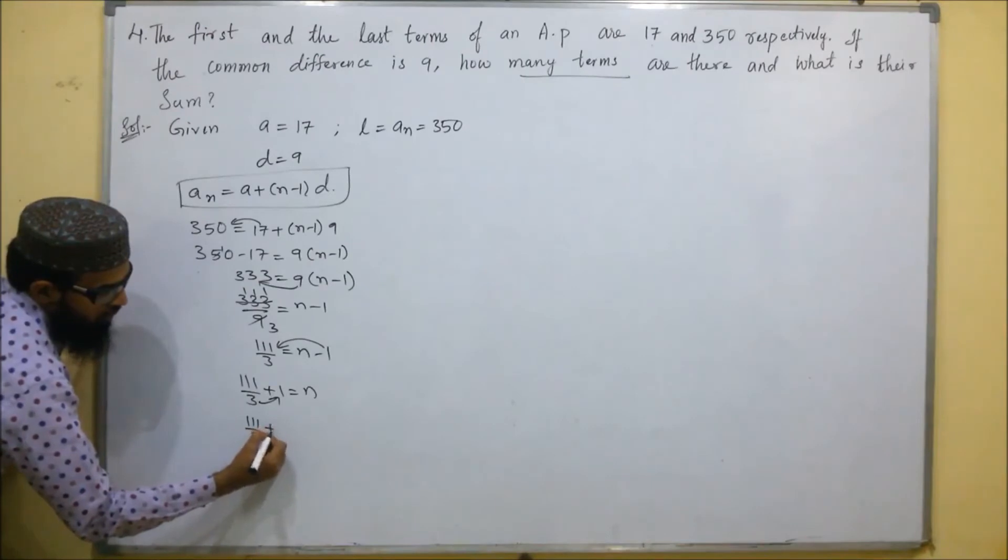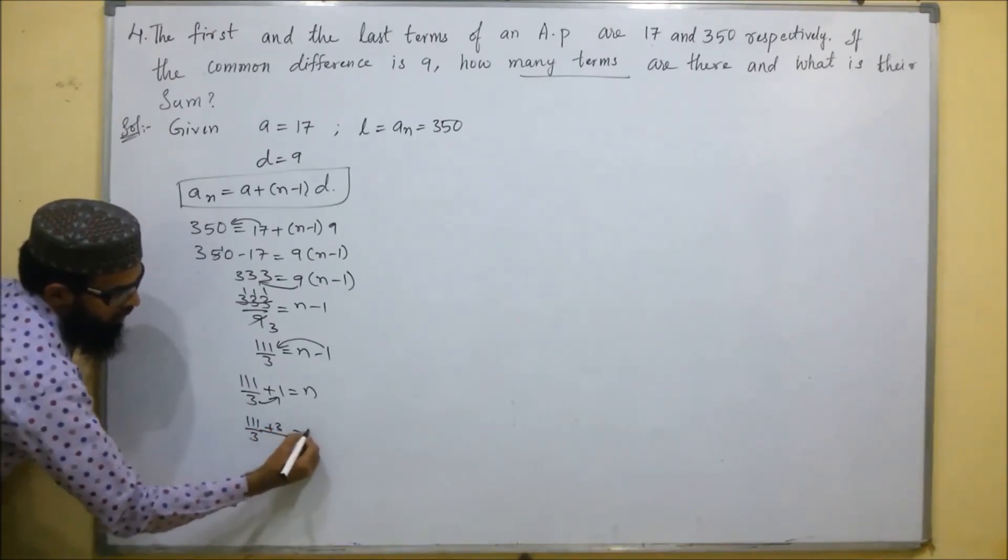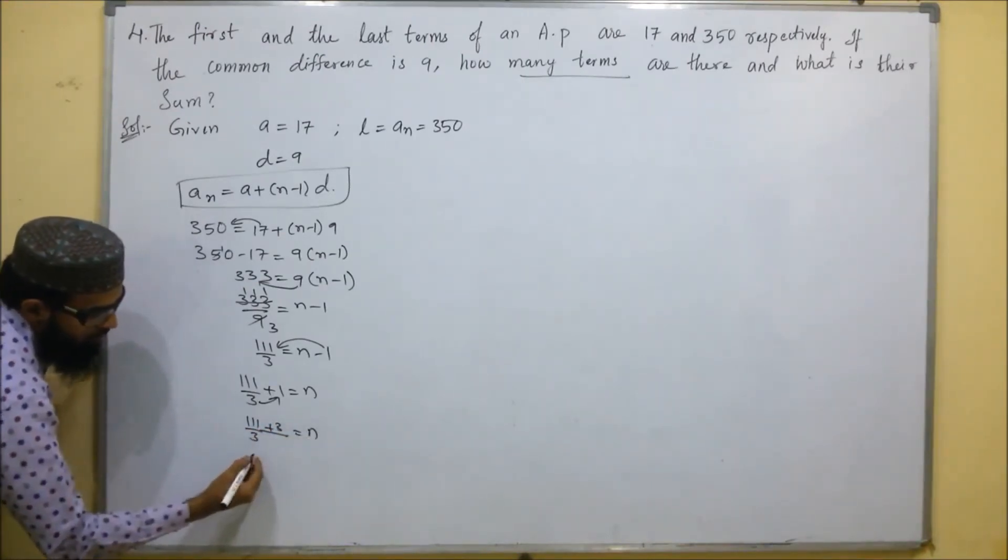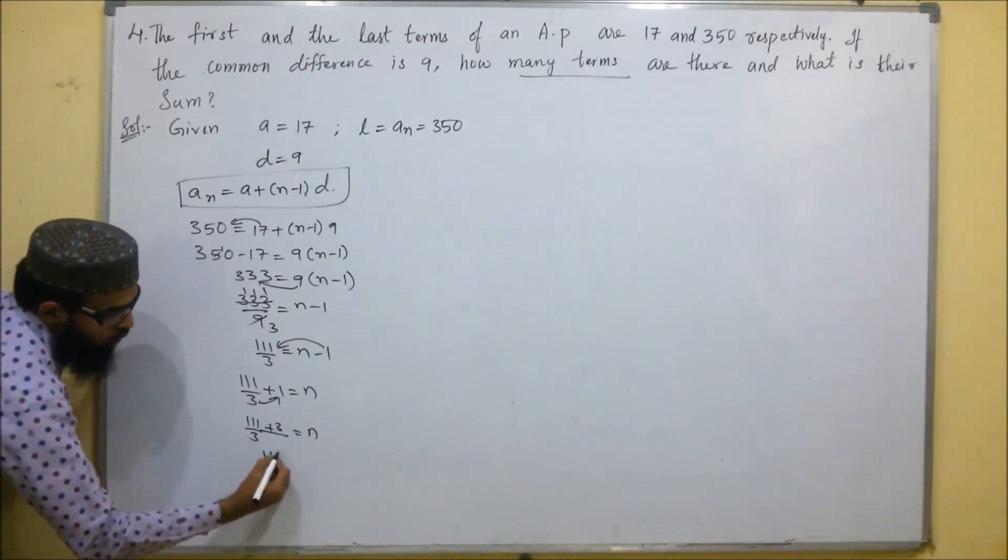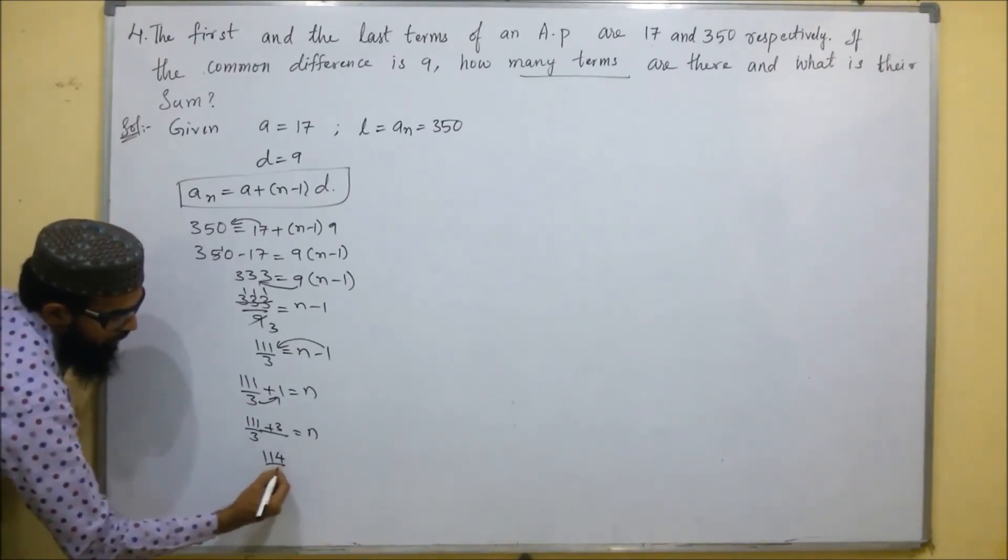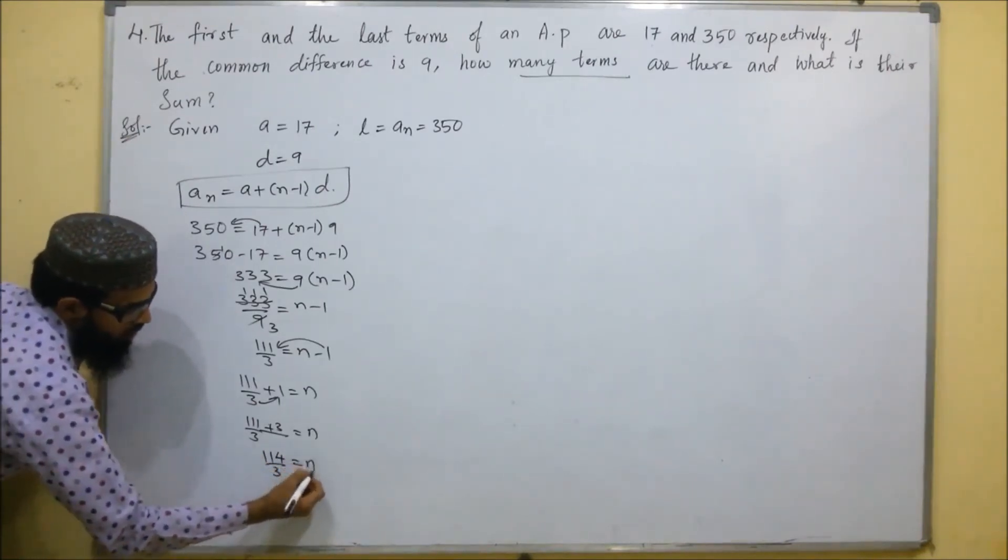Plus 3 equals N. So that will be 4 by 3 equals N.